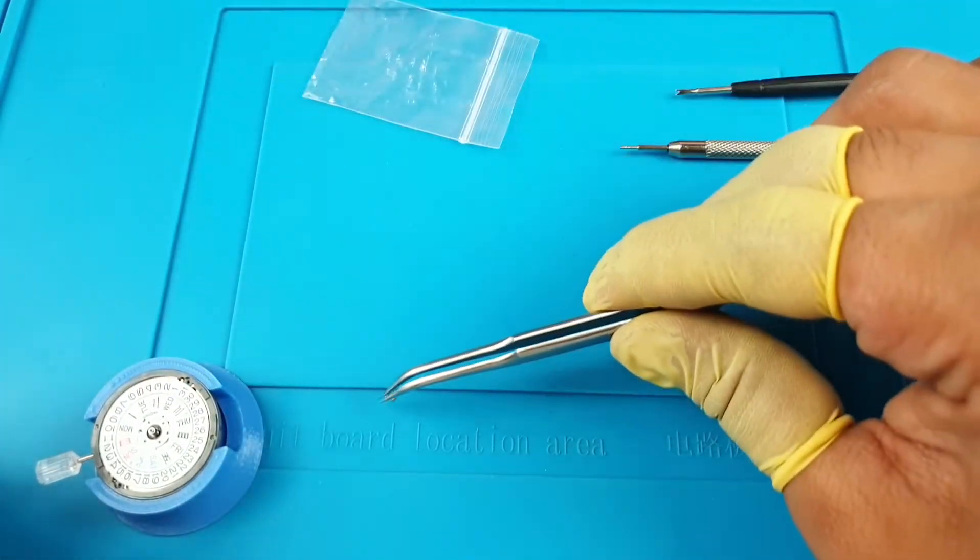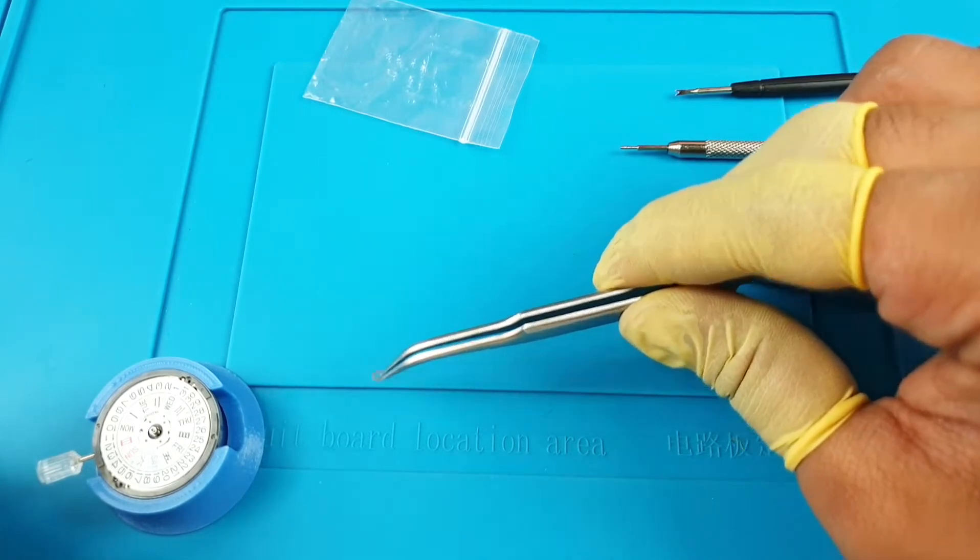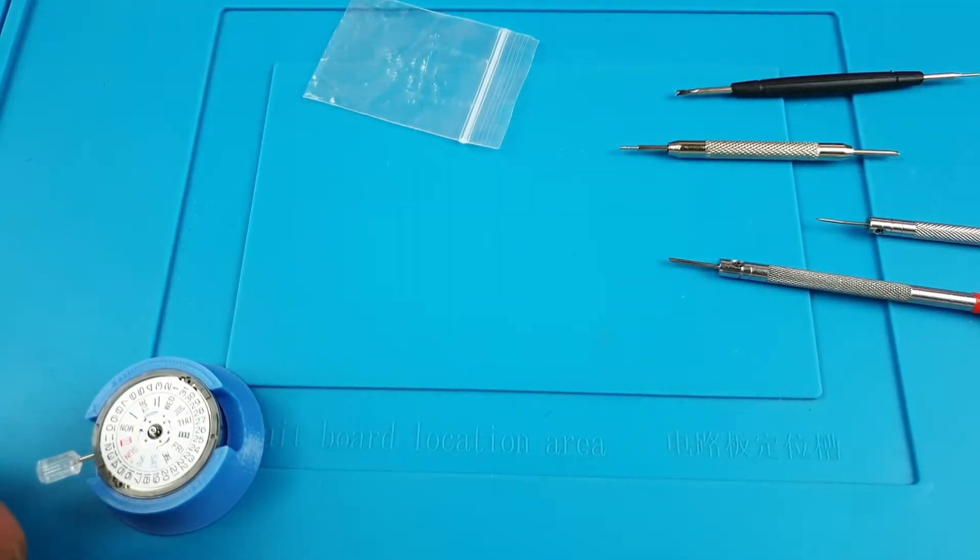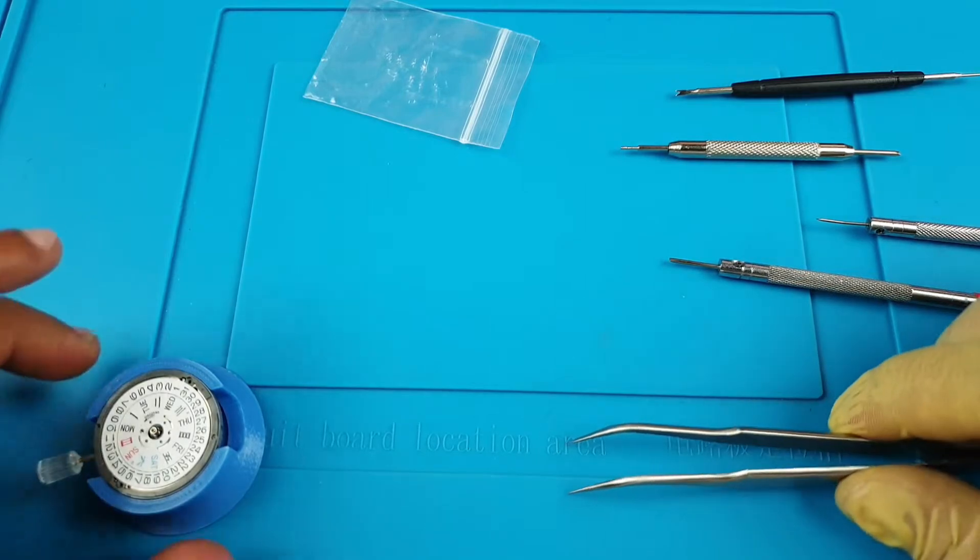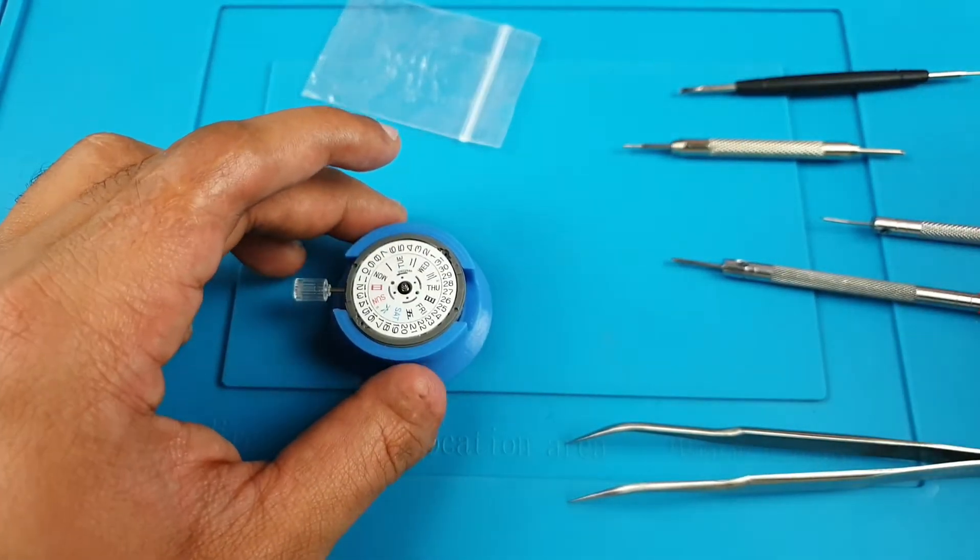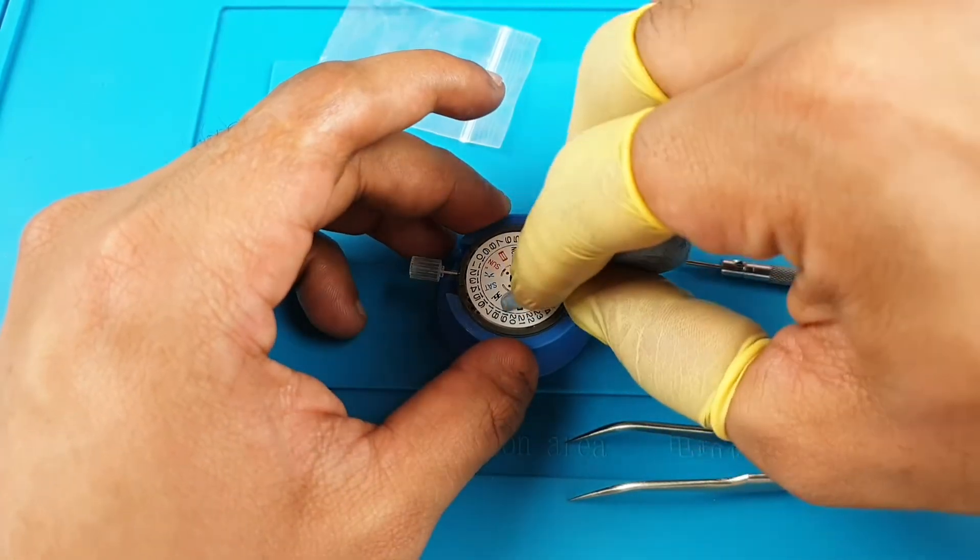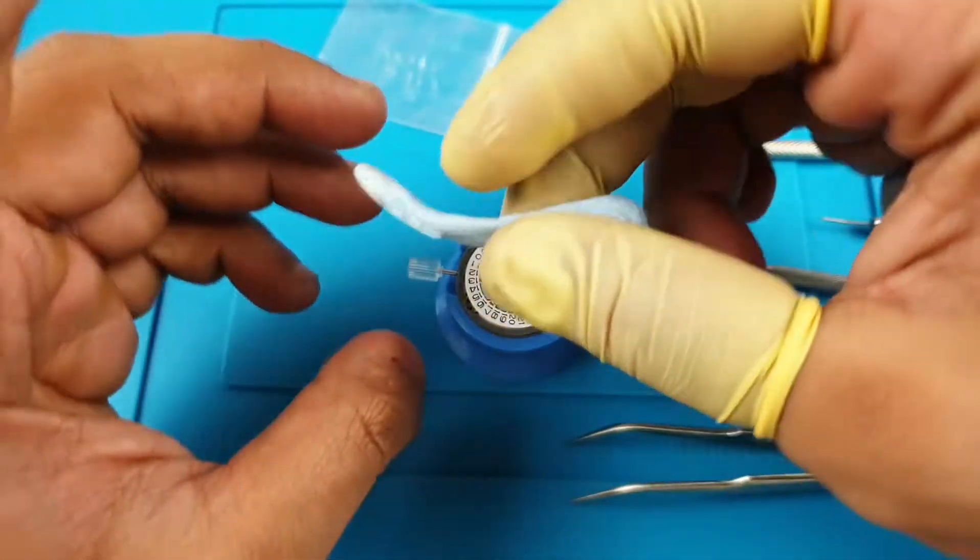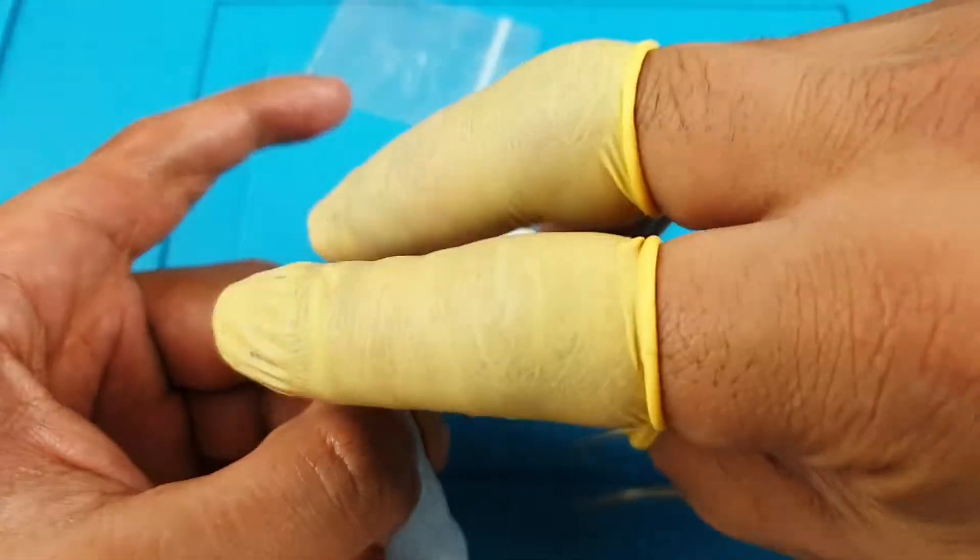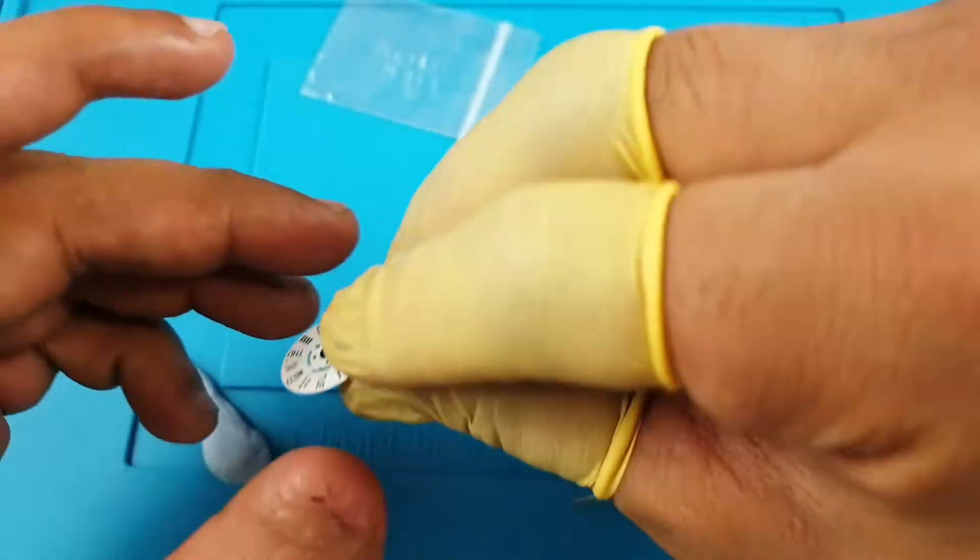Make sure you've got something around it because you don't really want to lose that, especially if you're considering using the day wheel again. So keep that safe. Now once that is off, then you can go ahead and remove the day disc. Now just use a bit of blue tack or tweezers, something sticky to lift it off, and that's the first half of what we're trying to do today complete and done.